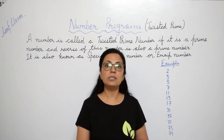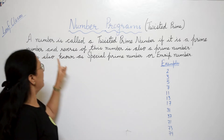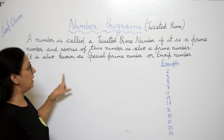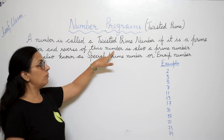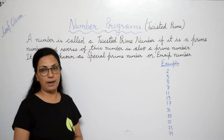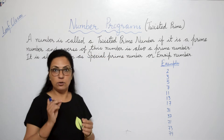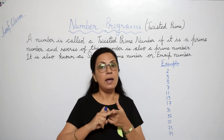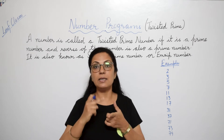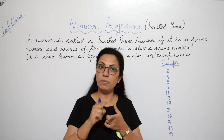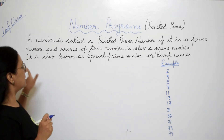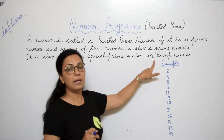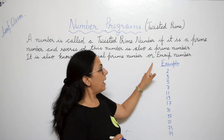Today's program is Twisted Prime Number. A number is called a twisted prime number if it is a prime number and the reverse of this number is also a prime number. So for twisted prime, the condition is that the number should be prime and its reverse should also be prime. Twisted prime number is also known as special prime number or mirror prime number.